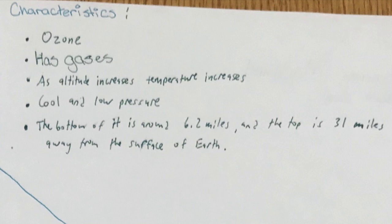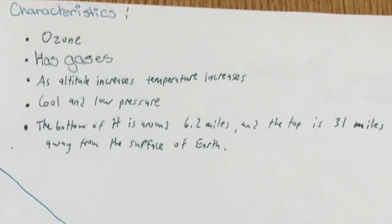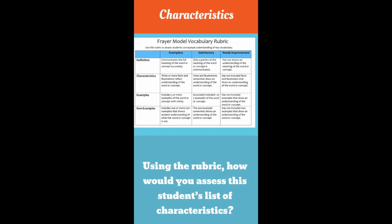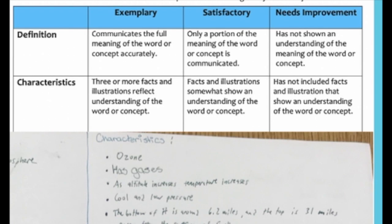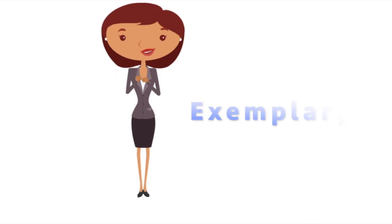Using the rubric, how would you assess the student's list of characteristics? Do you see three or more facts and illustrations that reflect understanding of the word or concept? Do you see a solid understanding of the word based upon this work? Or is a characteristic missing that you think is essential? In our opinion, the student's list of characteristics would earn the student an exemplary assessment for this indicator.